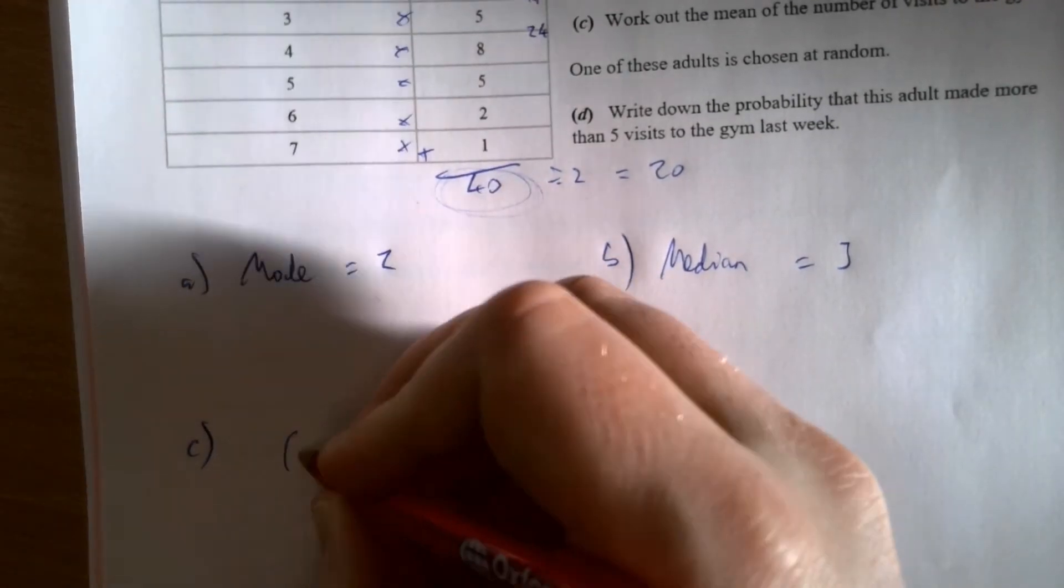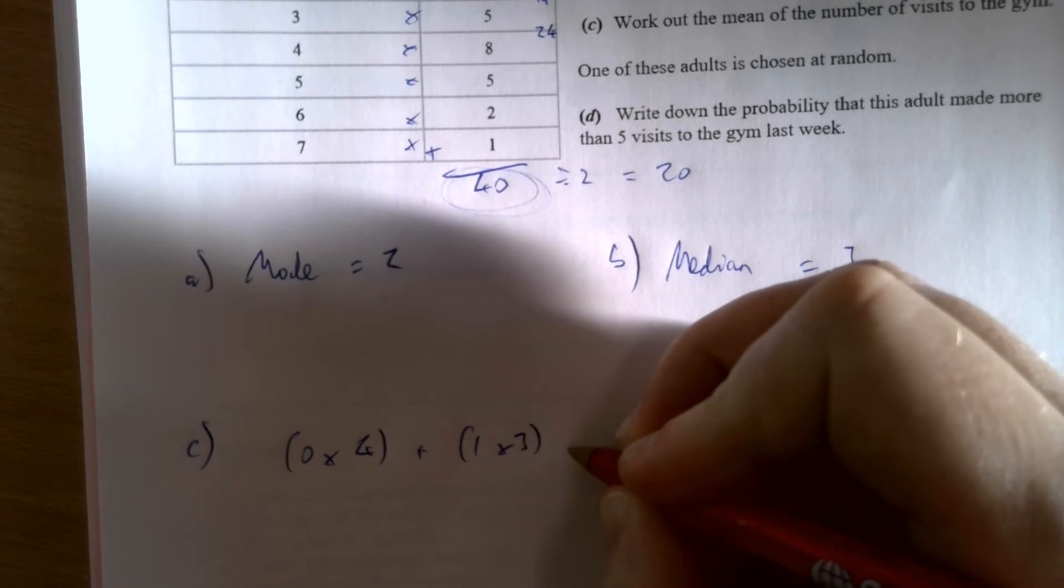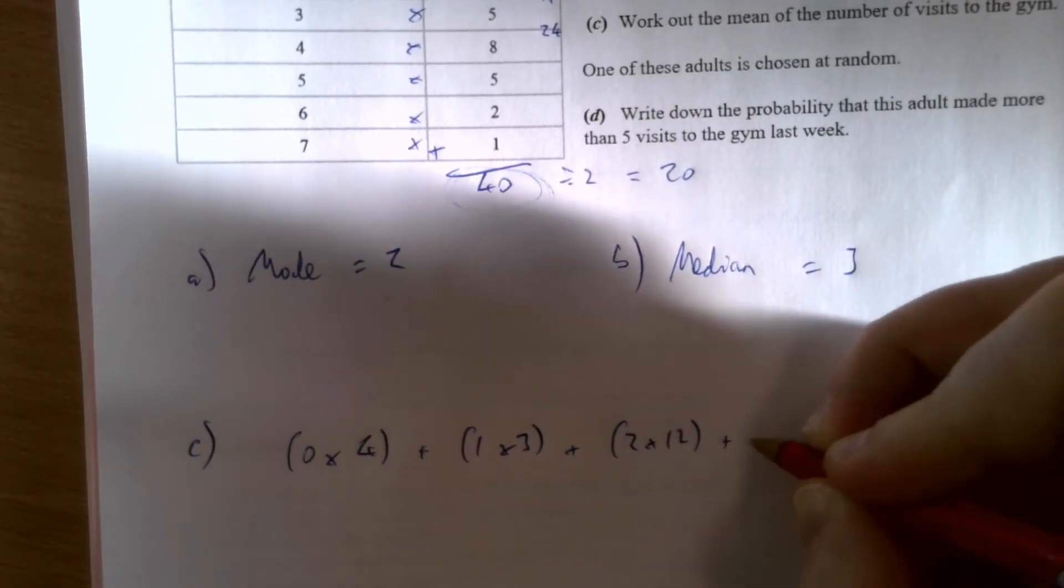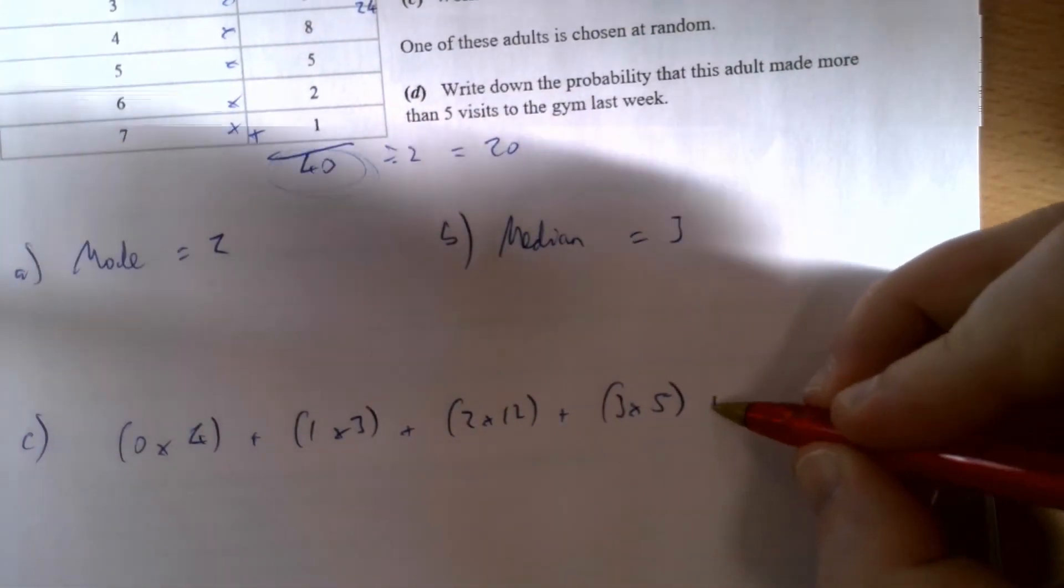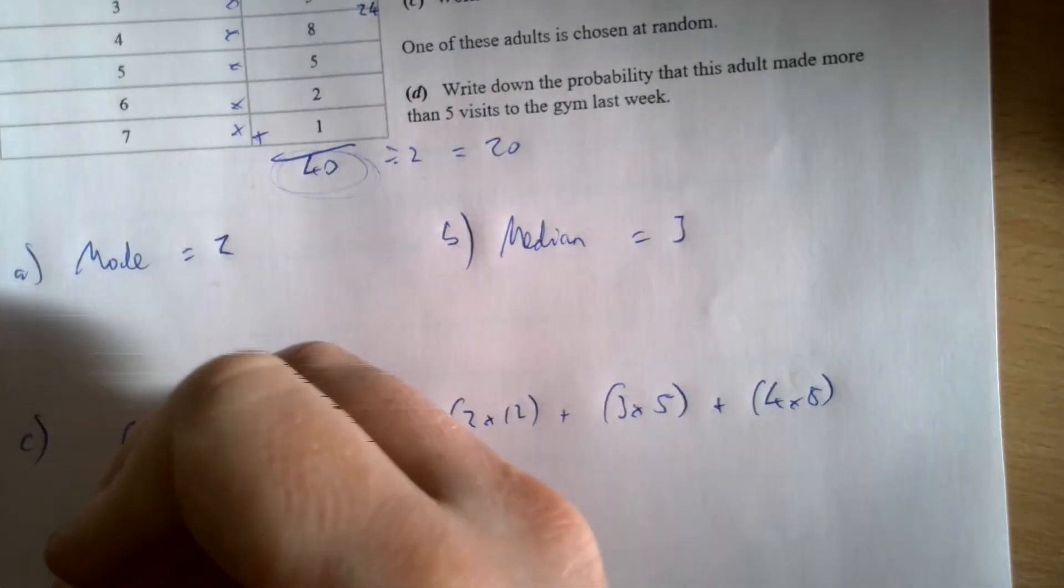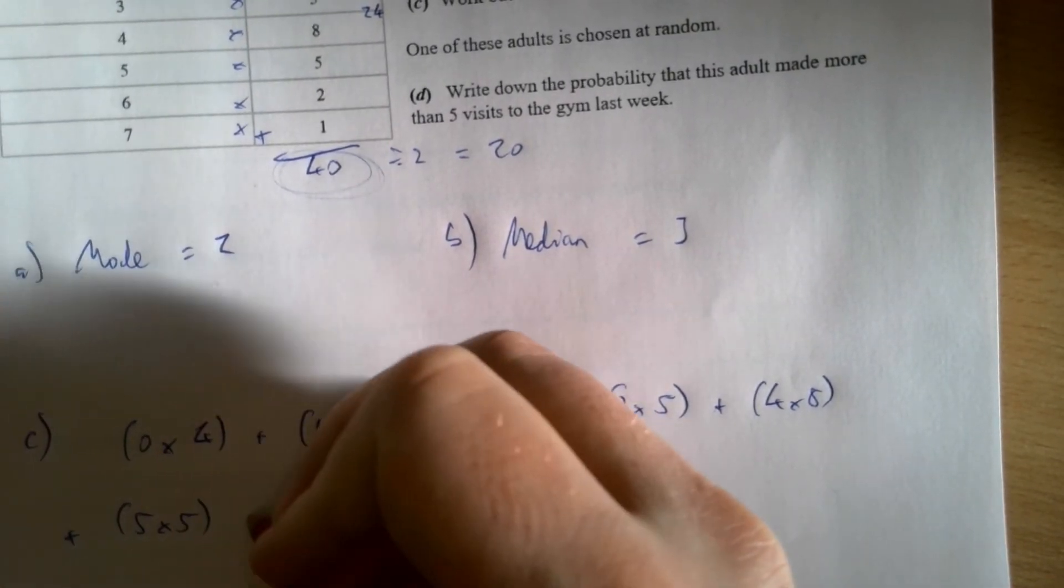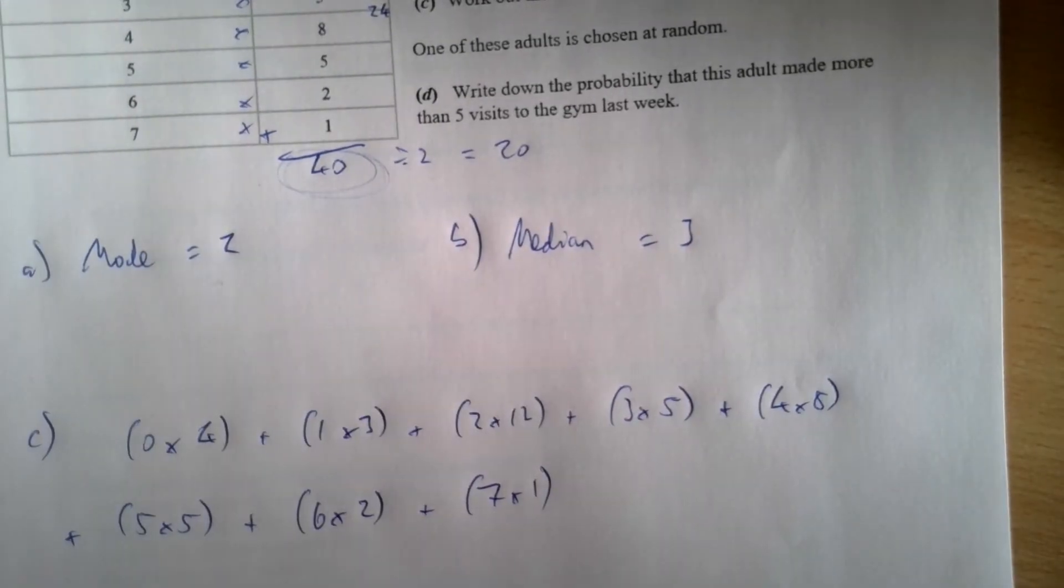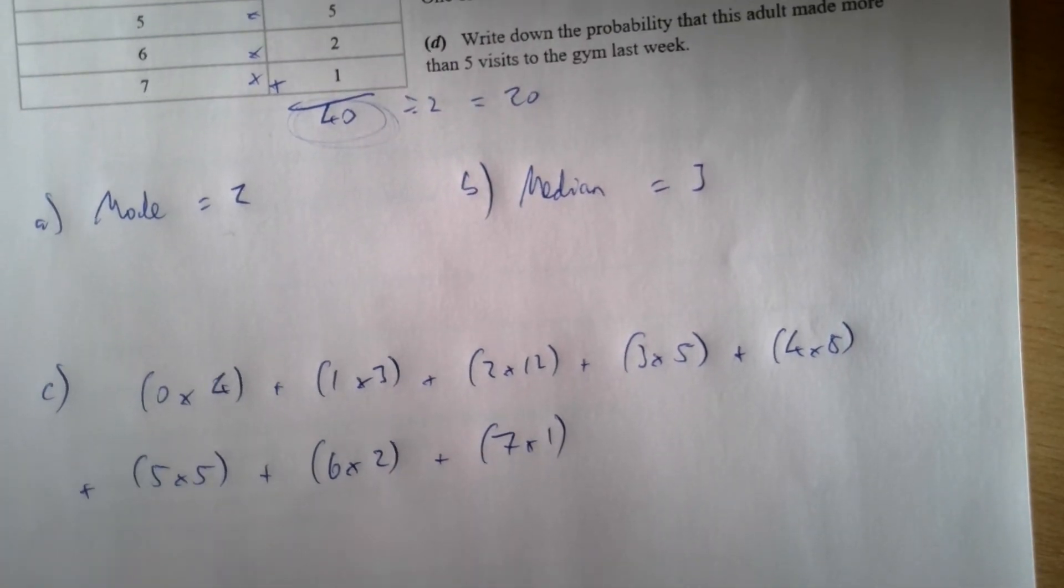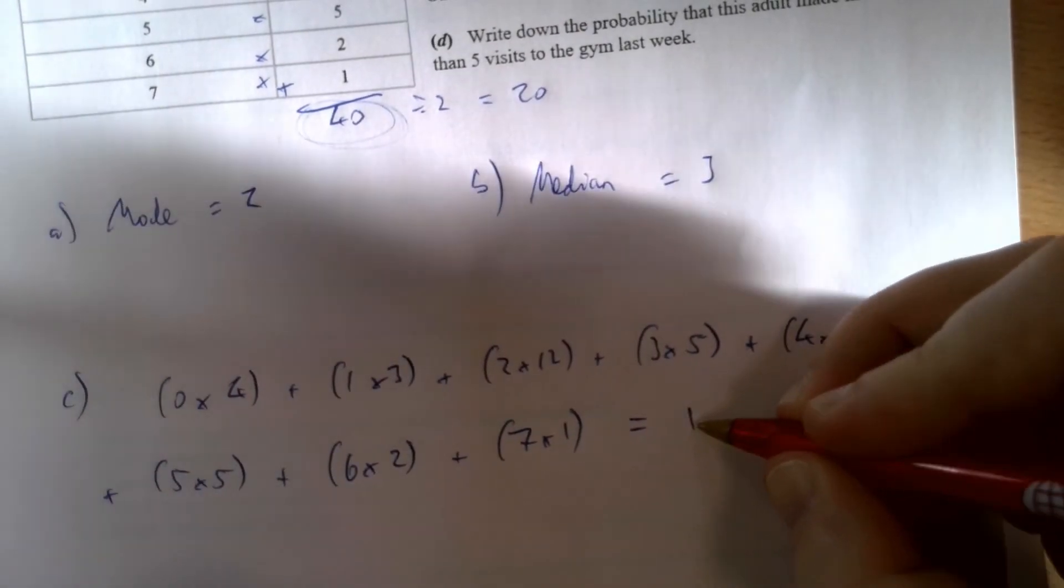It's zero times four plus one times three plus two times 12 plus three times five. I'm getting all of these numbers from the relevant sections of the table above, plus four times eight plus five times five plus six times two plus seven times one. That's the sum of all of the visits to the gym. One times three is three, 24, 15, four times eight is 32, 25, 12 and seven. That adds up to 118.